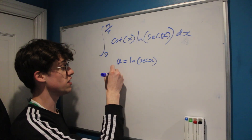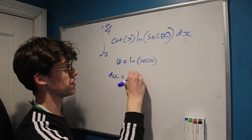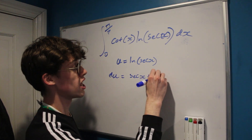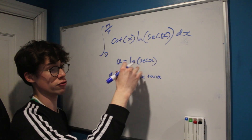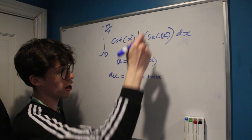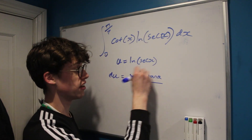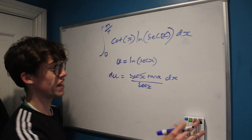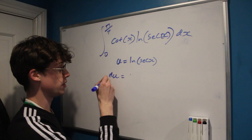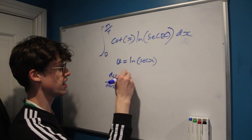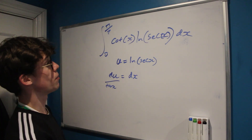So du will equal the derivative of the inside. The derivative of sec(x) is sec(x)tan(x), multiplied by 1 over sec(x) since the derivative of the natural log is 1/x. The sec(x)'s cancel, so du = tan(x)dx, which rearranges to dx = du/tan(x).